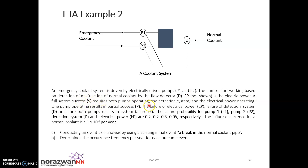The failure of electrical power, failure of detection system D, or failure of both pumps results in system failure. For partial success, one pump operating results in partial success. So if either P1 or P2 fails but D and EP are functioning, the result is partial success. The failure of both P1 and P2, D, and EP results in system failure.